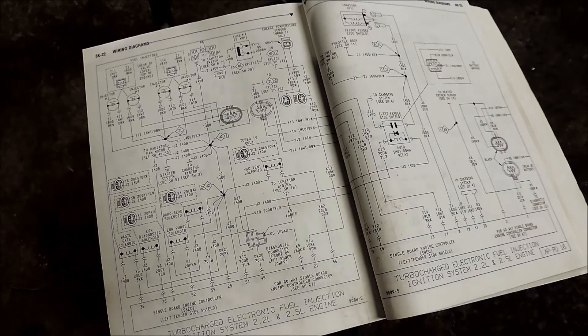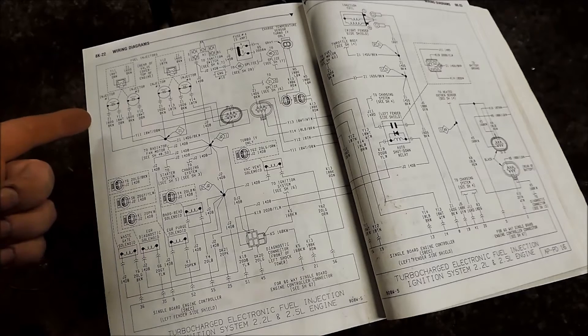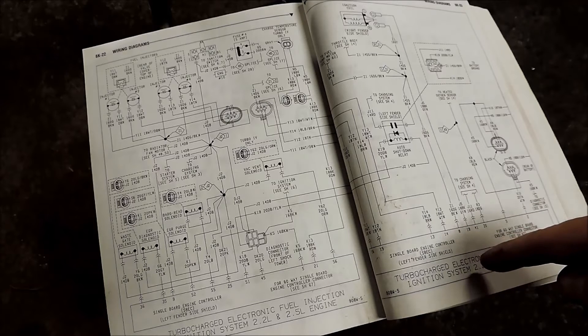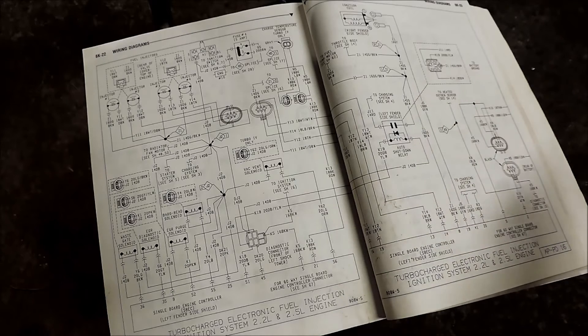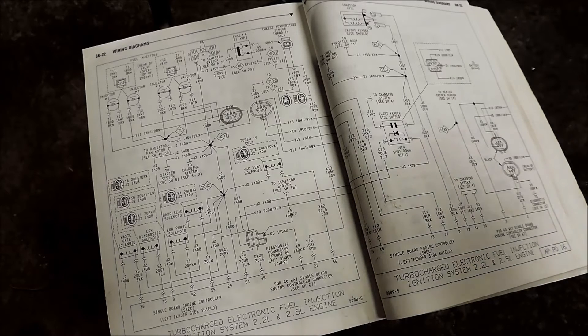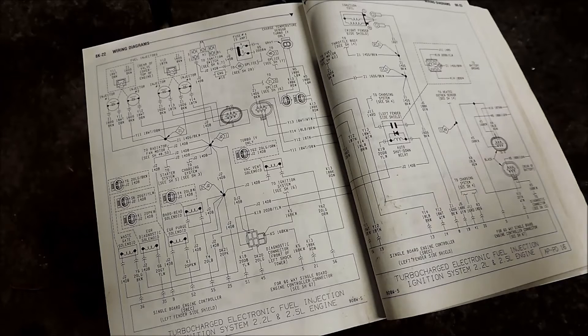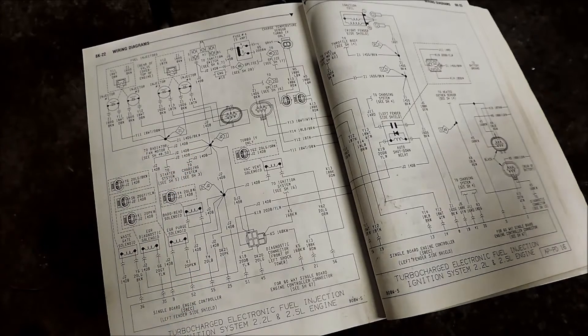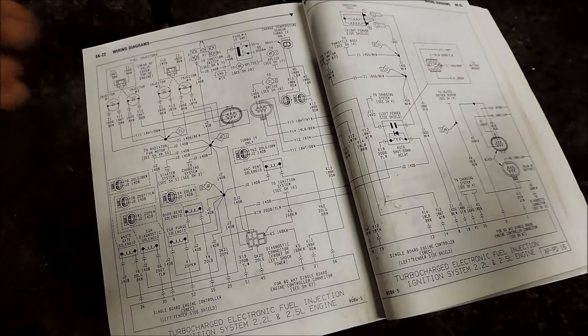Factory service manuals yet again coming through for us. If you don't have a set, please pick them up. It'll change your life. Now here's the deal on the old Chrysler cars like this. They ran power to the individual injectors just always on, and then they would ground it through the ESPEC, the single board engine controller. They would ground the individual injectors through that.